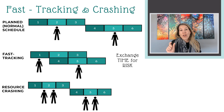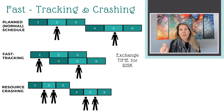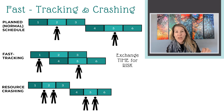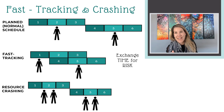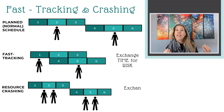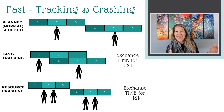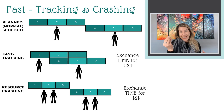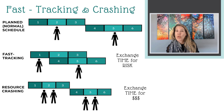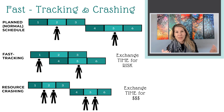So we are still completing the work in sequence — task 1, 2, and 3, followed by task 4, 5, and 6. However, because we are adding additional resources, we're going to get the work done faster. With resource crashing, remember, we're exchanging time — we're going to get it done faster at the cost of money, because we're going to pay additional resources to be working on those tasks to get them done faster.